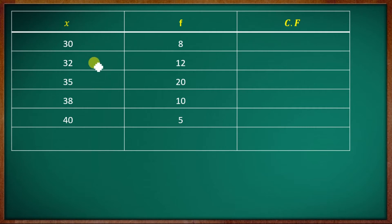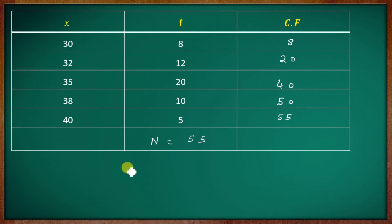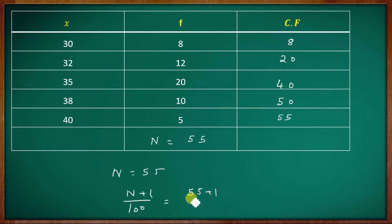Setting up the table: X is 30, 32, 35, 38, 40 with frequencies 8, 12, 20, 10, 5. Total N equals 8 plus 12 plus 20 plus 10 plus 5, which is 55. The cumulative frequencies are 8, 20, 40, 50, 55. For P10: 10 into (N+1) by 100 equals 10 into 56 by 100 equals 0.56, and for P90: 90 into (N+1) by 100 equals 0.55 times 90 equals 49.5.